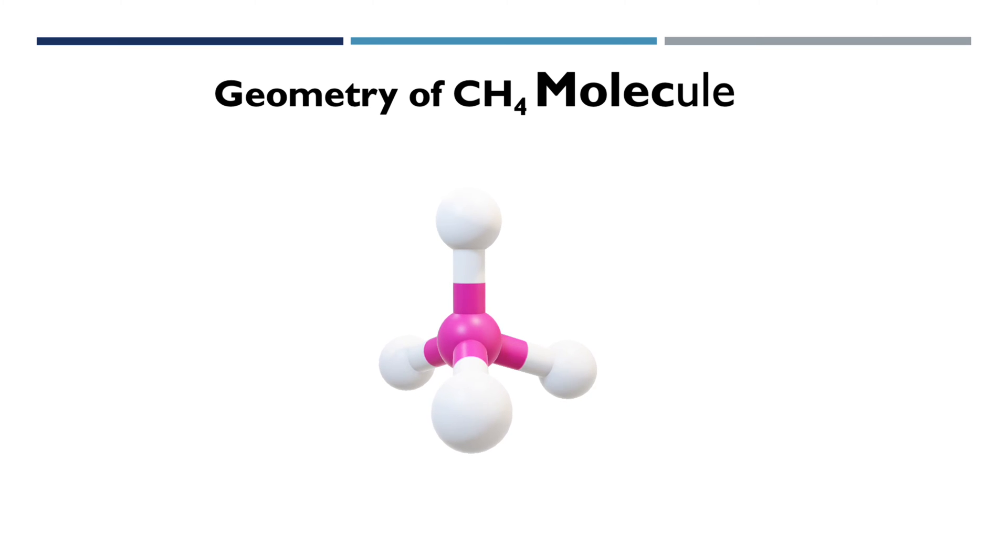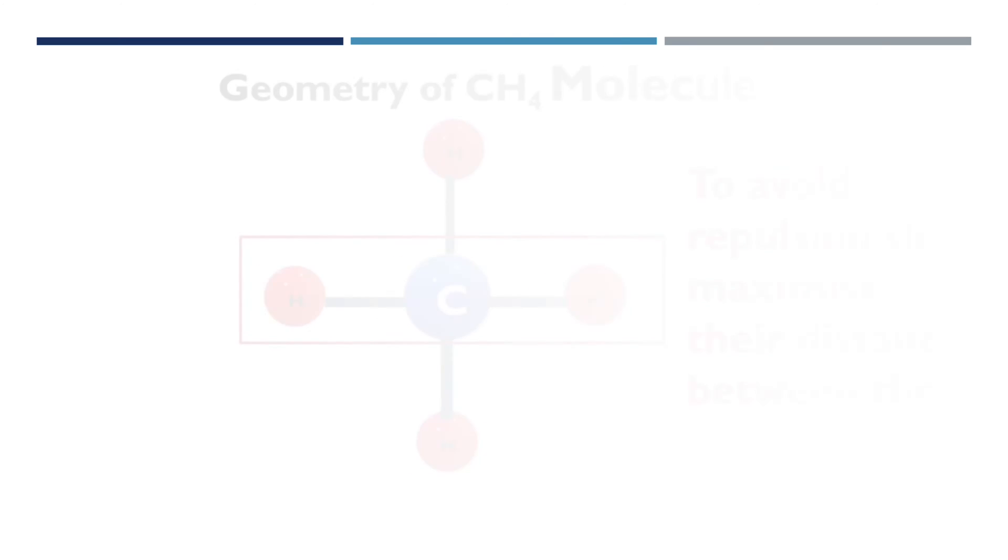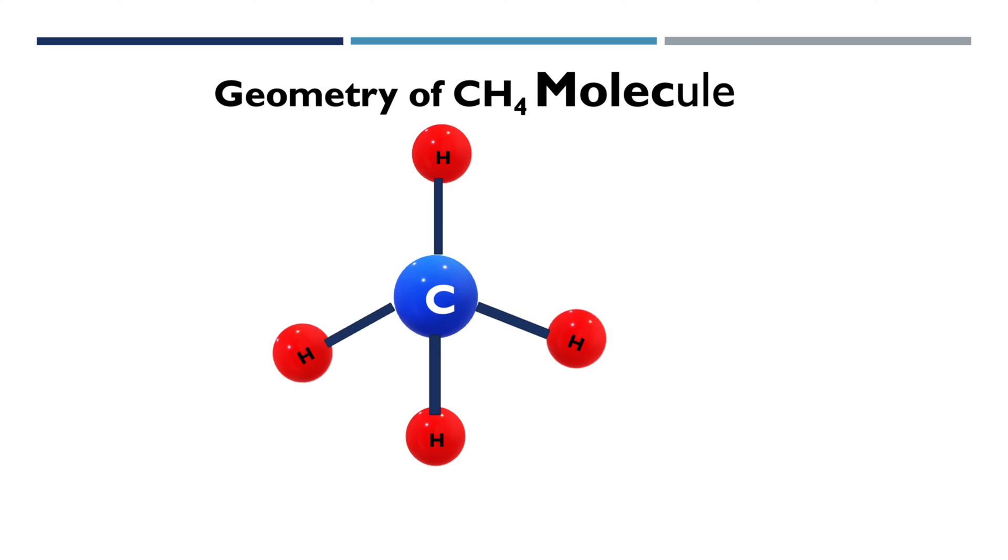According to valence shell electron pair repulsion theory, the geometry and shape of the molecule depends upon the number of electron pairs, which may be bonded as well as non-bonded in the valence shell of the central atom.